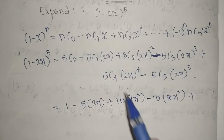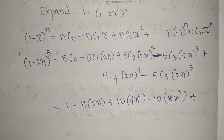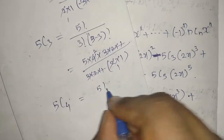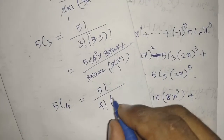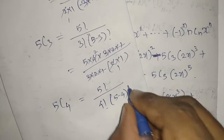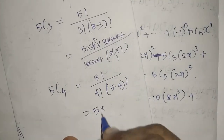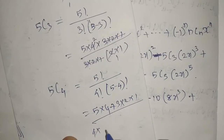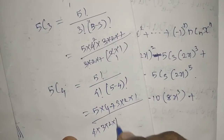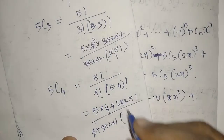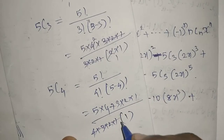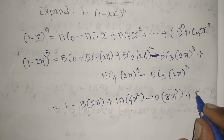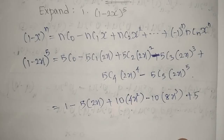For 5C4: 5 factorial divided by 4 factorial times (5 minus 4) factorial, which is 1 factorial. So: 5×4×3×2×1 divided by (4×3×2×1)×1. The 4×3×2×1 cancels, leaving just 5. So 5C4 equals 5. Then (2x)^4 equals 16x^4, giving plus 5×16x^4 = 80x^4.